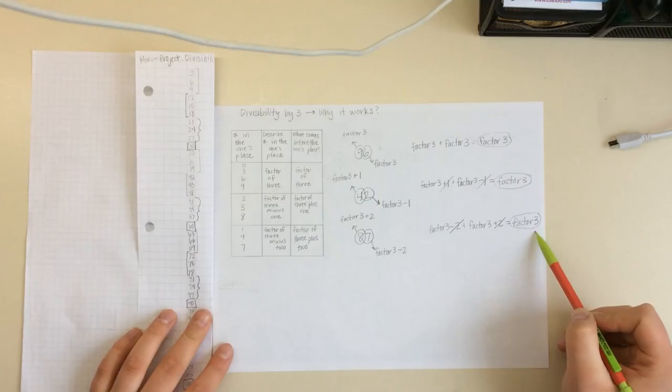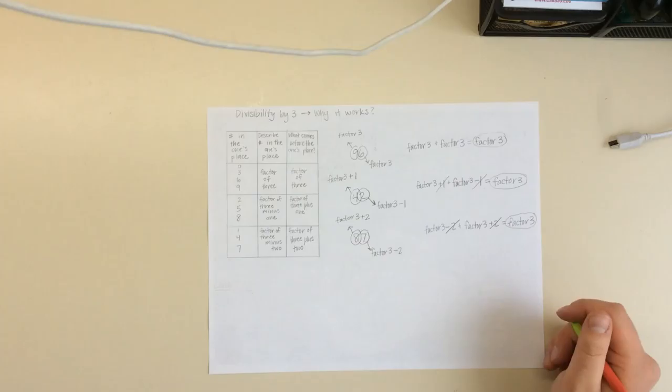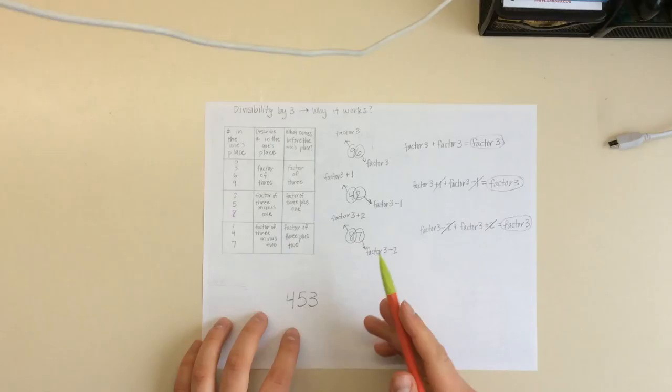So just like we said here, a factor of 3 minus 2 — so 9 minus 2 gave us 7 — and then 6 plus 2 gave us 8, so 87. And then we had a factor of 3 left over, so then we knew that it was divisible by 3.